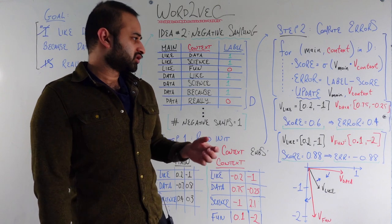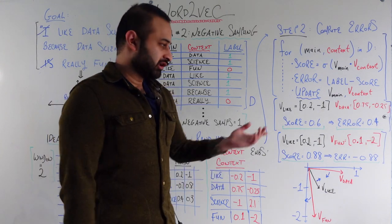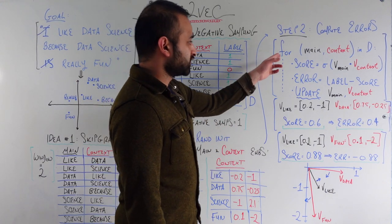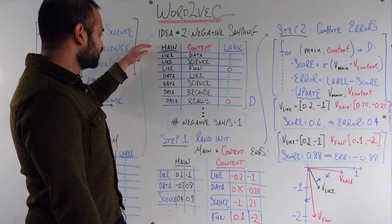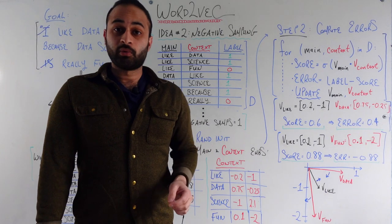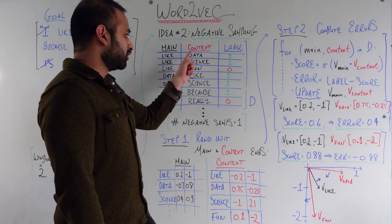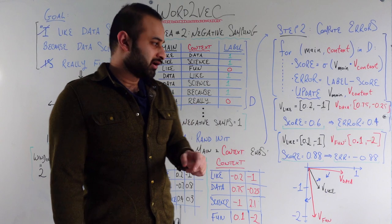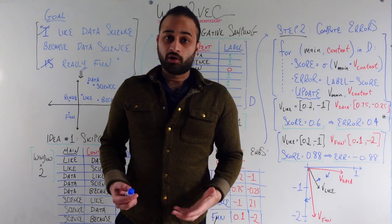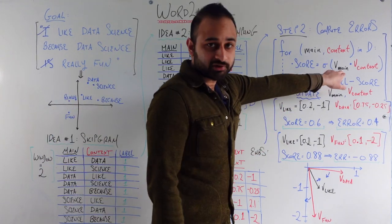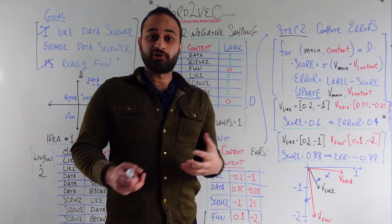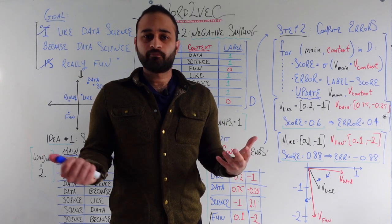The algorithm is pretty short — it won't take much to explain. We have a real example with real data we'll walk through in parallel. The outer for loop says: for every row in our dataset D, we walk down the entire dataset looking at each row one by one. The first row we'll look at has main word 'like' and context word 'data' with a label of one. The first thing we do is calculate something called a score.